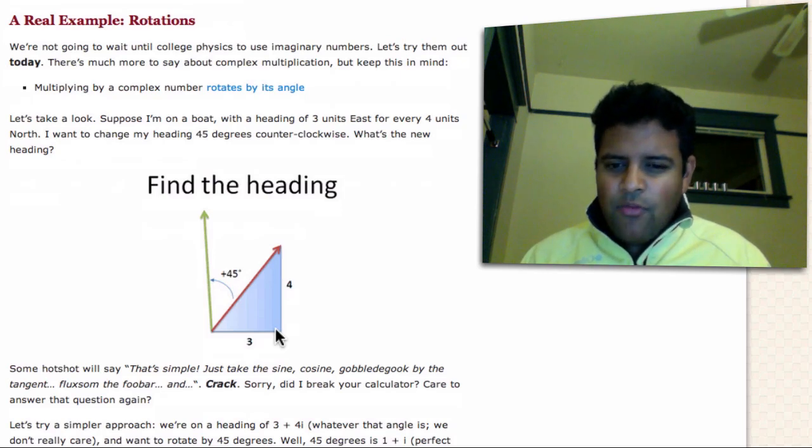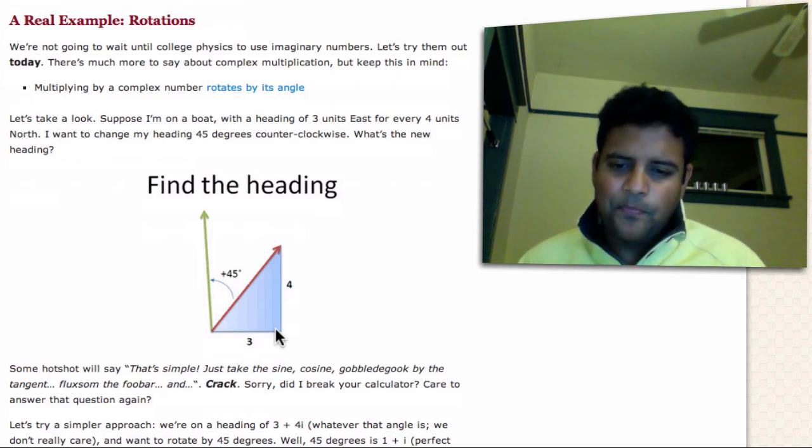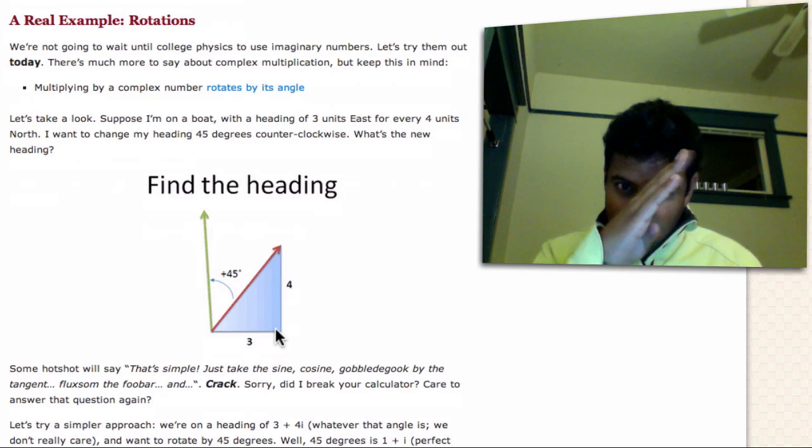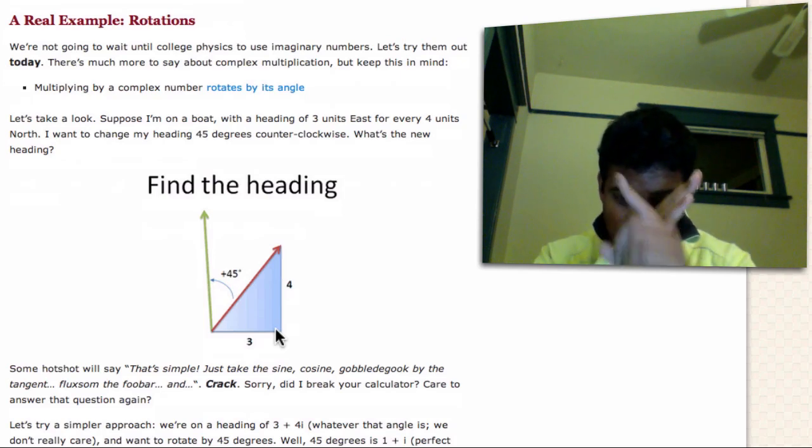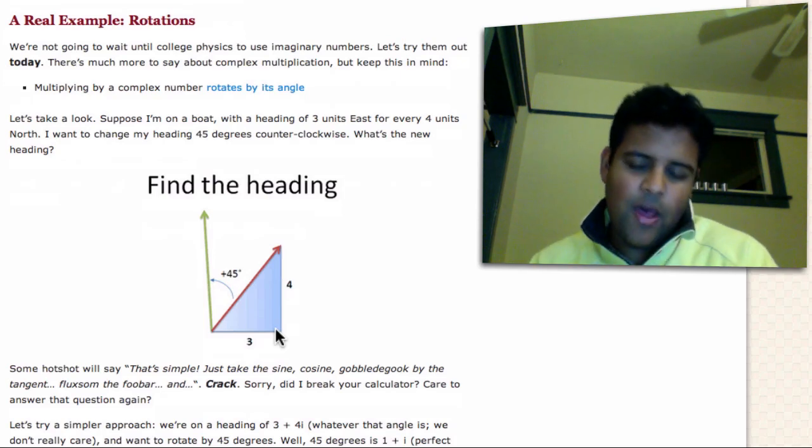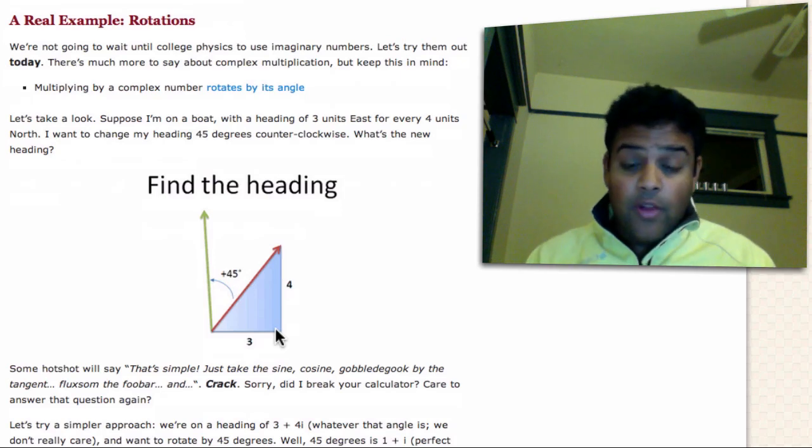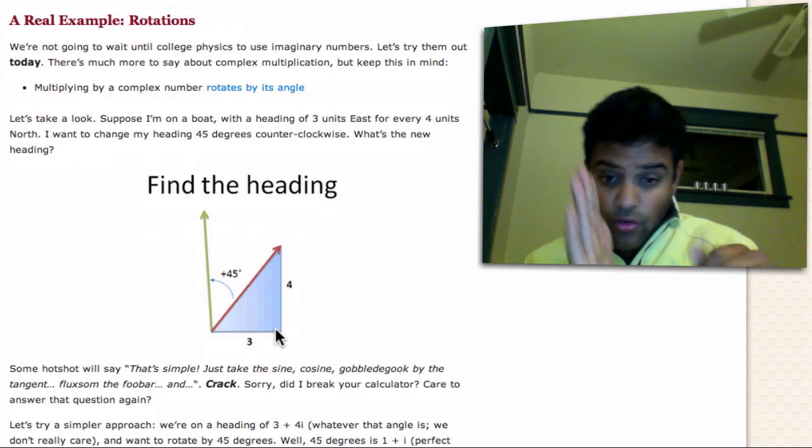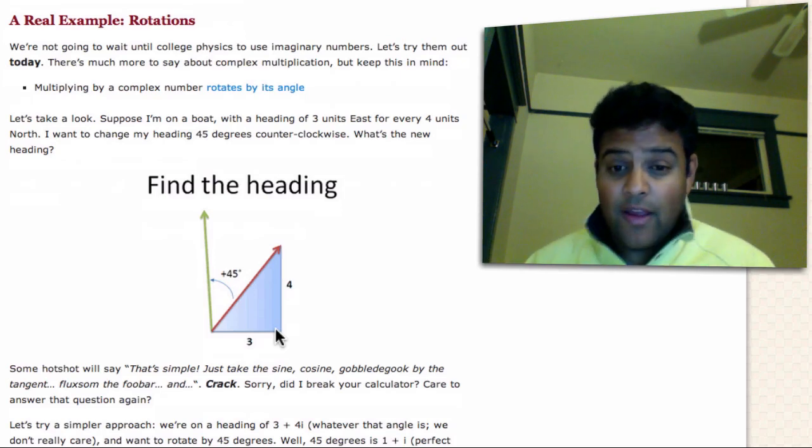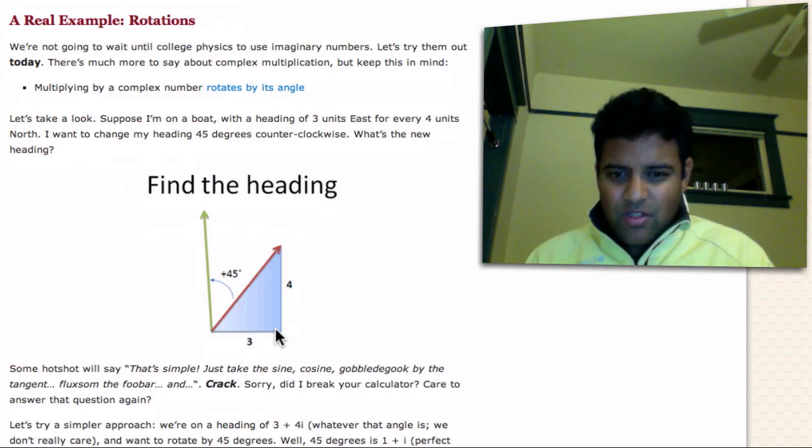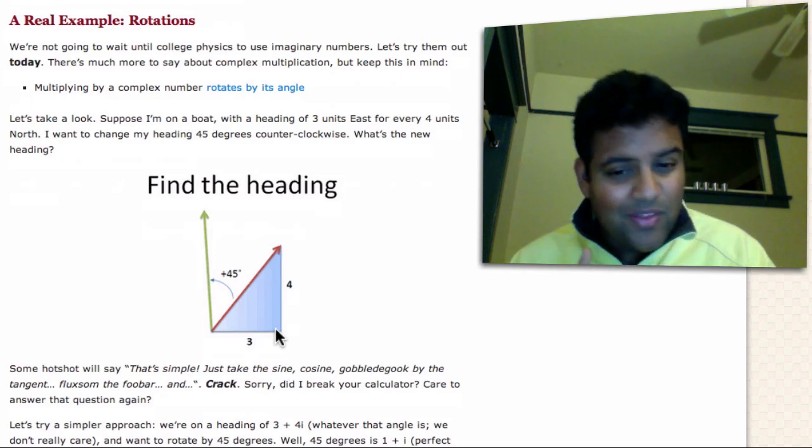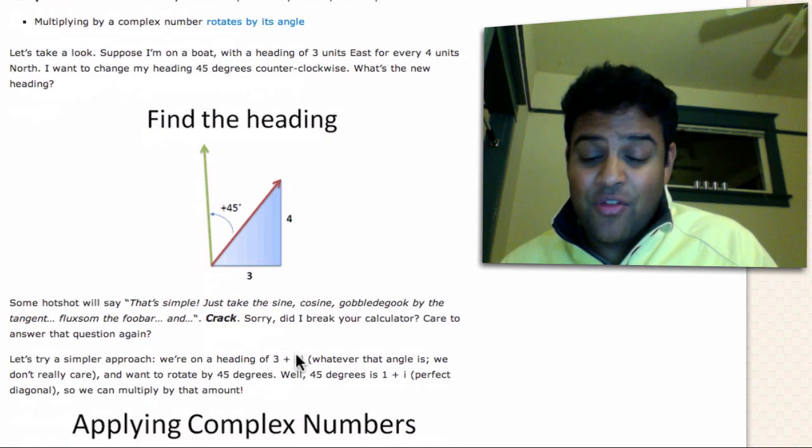But what is that new heading? And it's actually kind of a hard problem. If you don't know anything about imaginary numbers, how would you figure this out? I mean, really, like, I'm on three and four. This is my heading, and I want to turn it 45 degrees. What is that new heading? You can give me an angle if you like, or you can give me a new trajectory. That's fine. But without a calculator, it's actually kind of difficult because what do you do? You don't have much to work with.